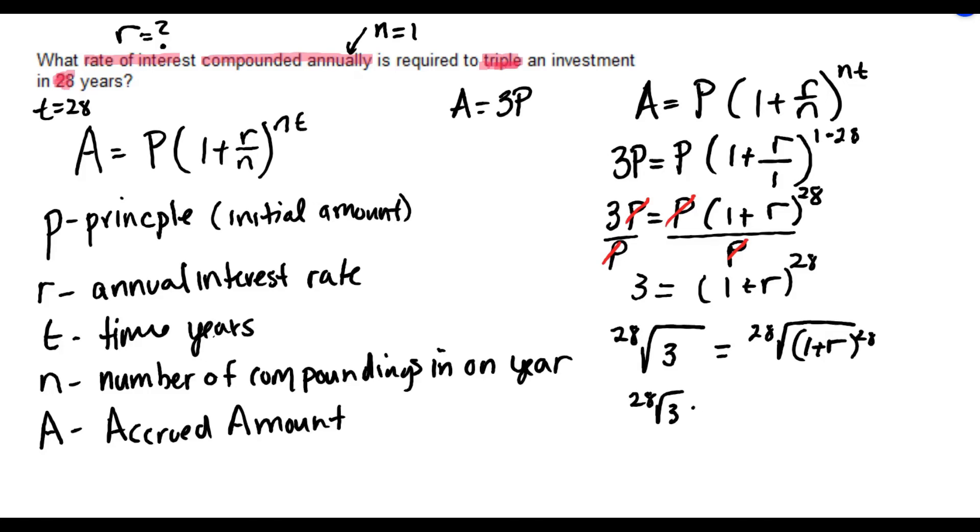The 28th root and the 28th power will cancel each other out, leaving me with 1 plus R on the right. And then I could get R by itself by subtracting 1 on both sides. So R is equal to the 28th root of 3 minus 1.